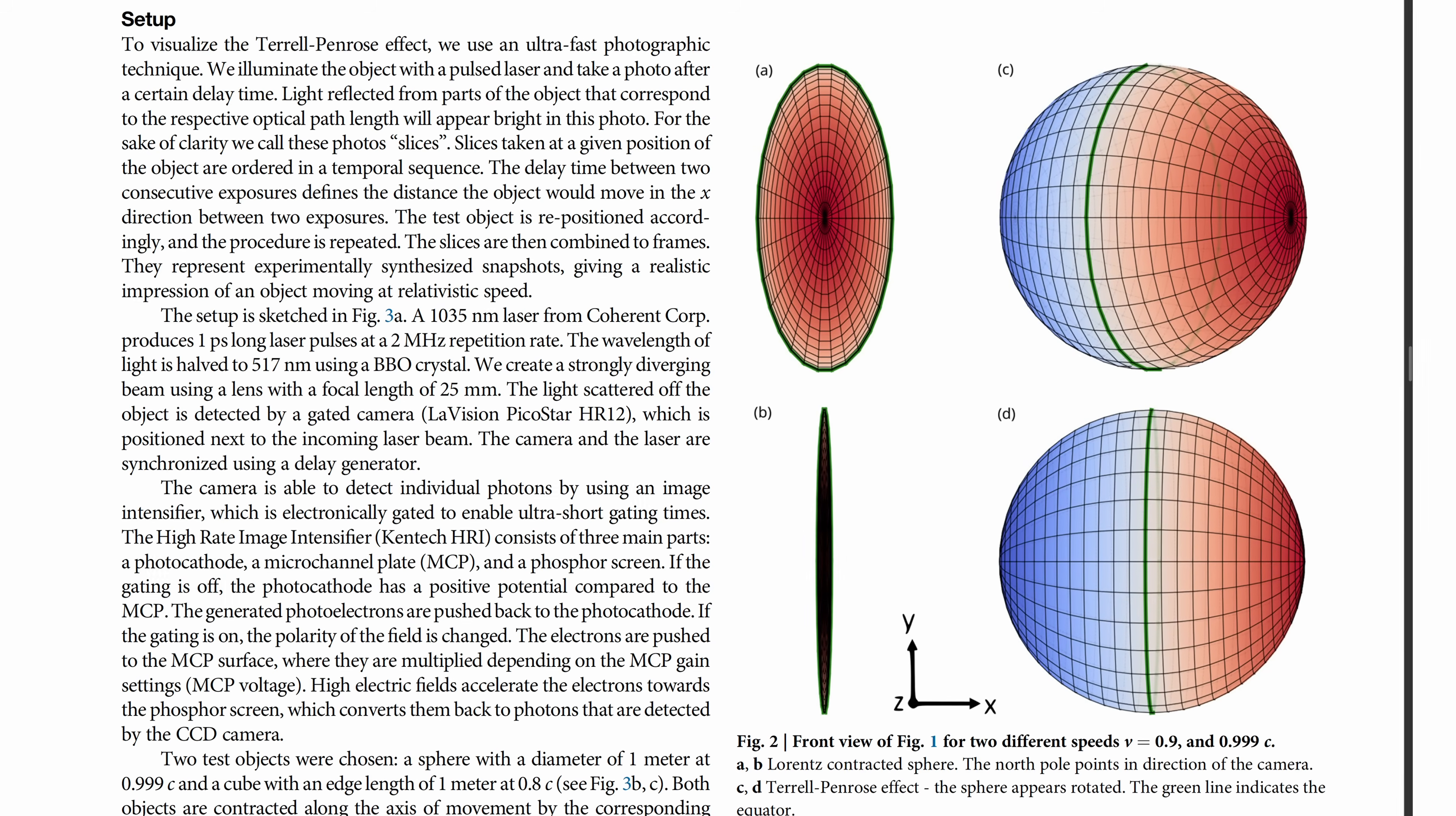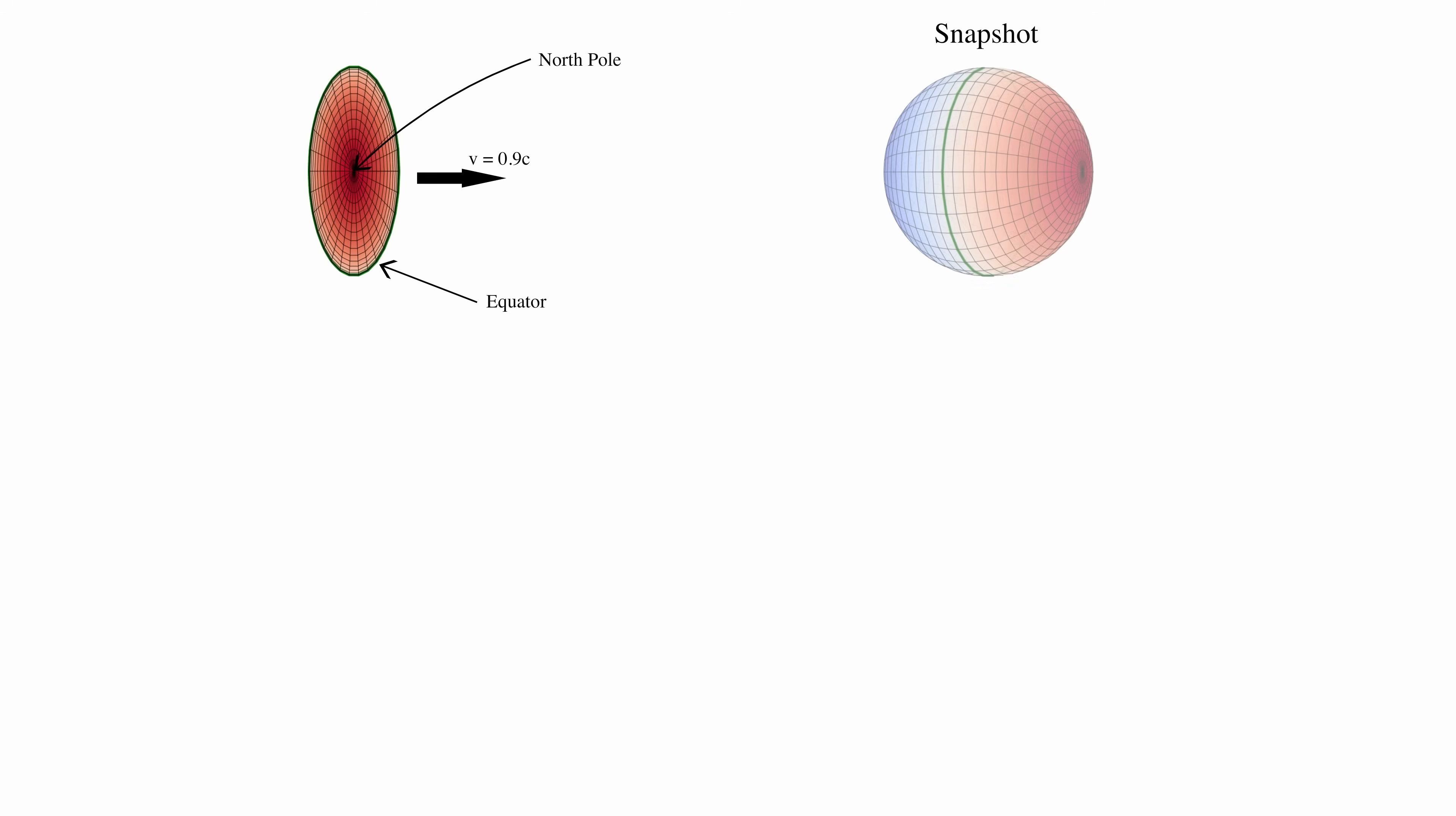So as they show in this article, if you have a ball moving at the velocity of 0.9c to the right, it would be Lorentz contracted like this. The ball is oriented in a way that the north pole is facing towards you, and the outside green line is the equator. But if you created a snapshot of such ball, then this is what you would see.